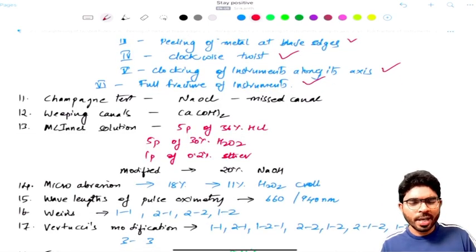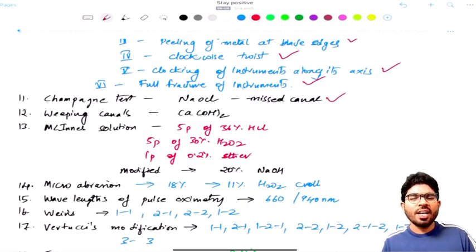Point number 11 was already given in the recent NEET examination - that is champagne test or bubble test. Basically, the solution used is NaOCl. And the purpose of this test is identification of a missed canal. Whenever the bubbles are going to come, you assume or predict that there is a vital pulp which is not being removed and you are going to find a missed canal.